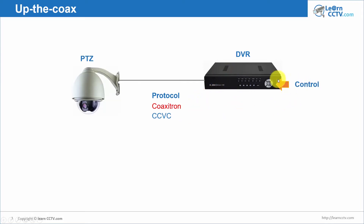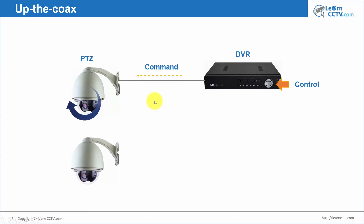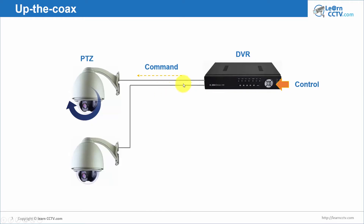The idea is that when you press the button here, you send commands through the coaxial cable and then you can move your camera — pan, tilt, and zoom. And of course, you can connect more cameras. Say you have a DVR with four channels — you can connect four cameras and send commands to every camera.